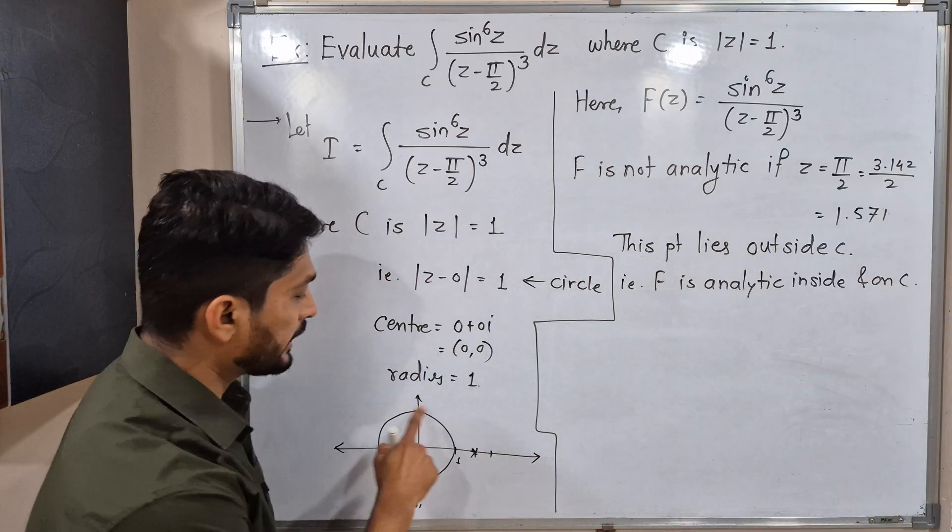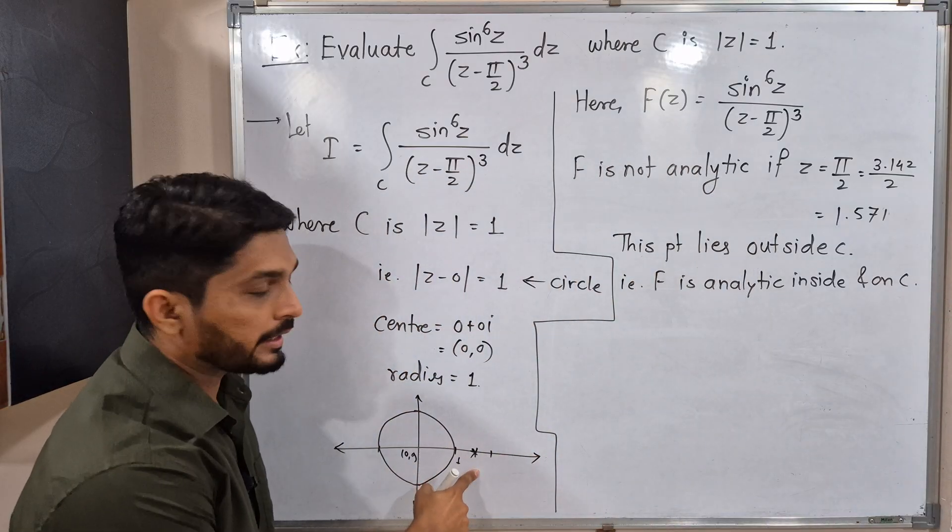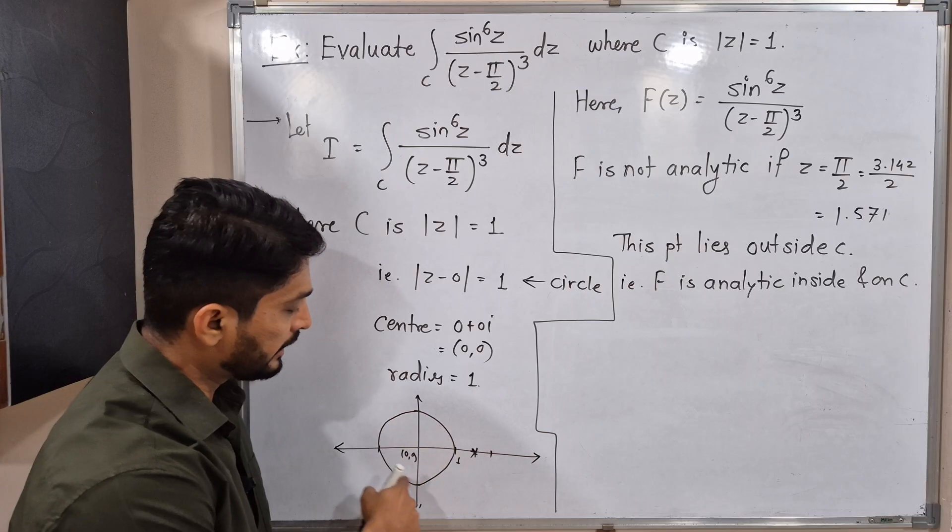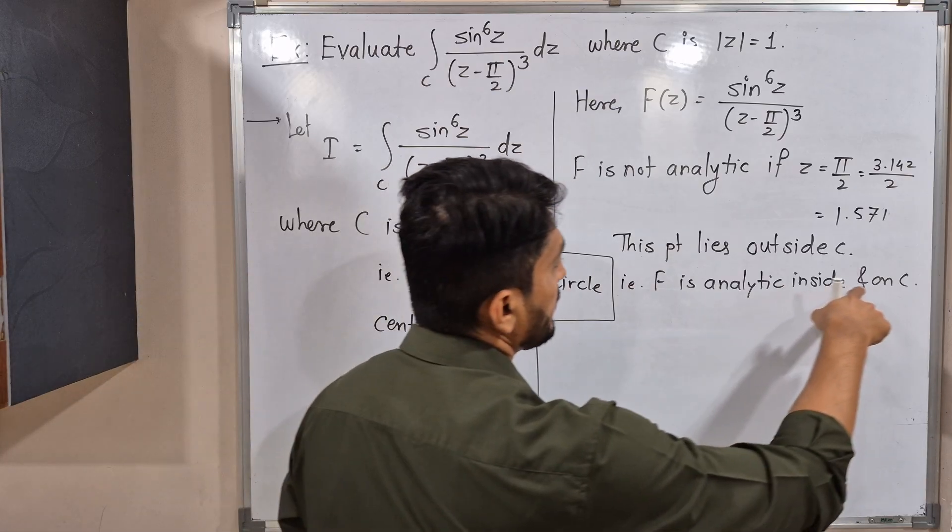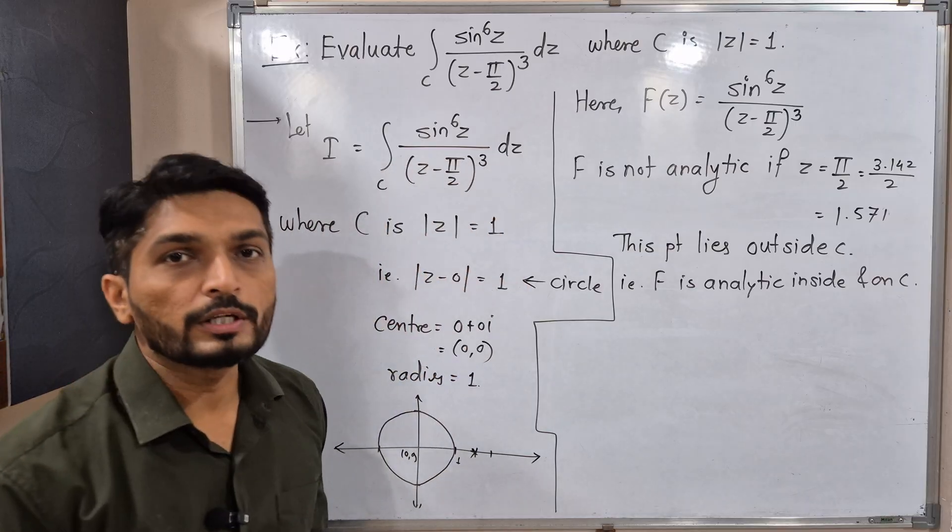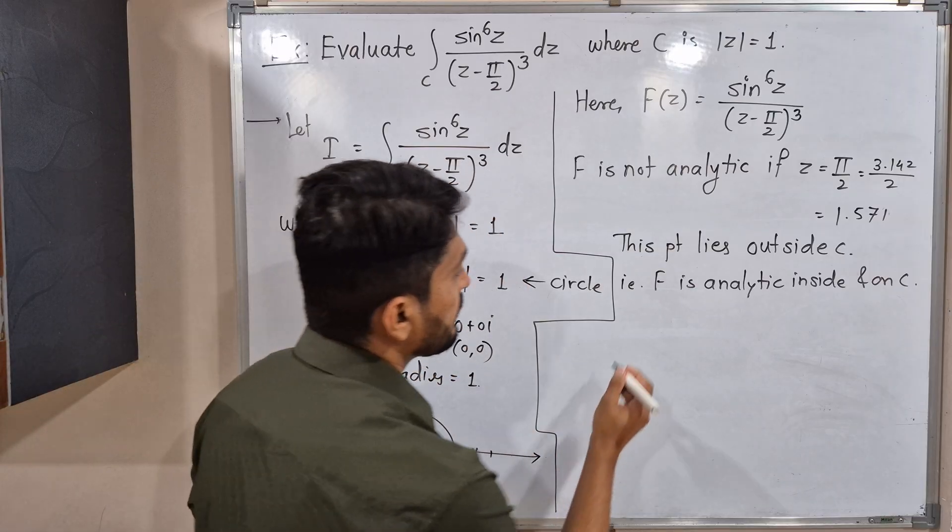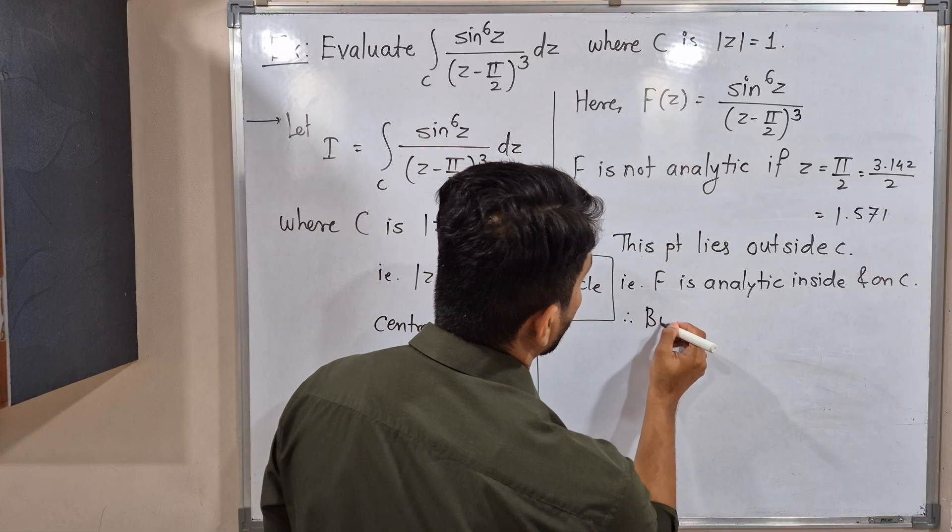Now, since the point where the function is not analytic lies outside the circle, that means our function F is analytic inside and on C. If it's analytic inside and on C, this is the condition for Cauchy's theorem—the same condition we are getting.